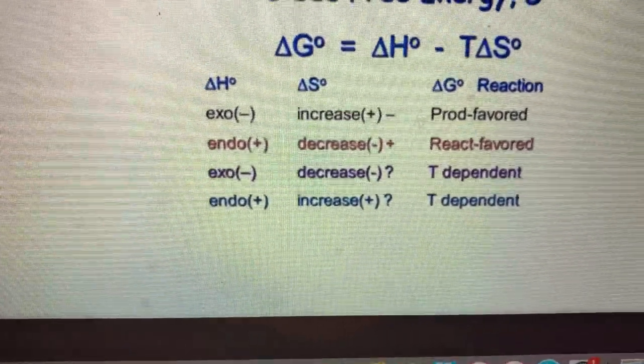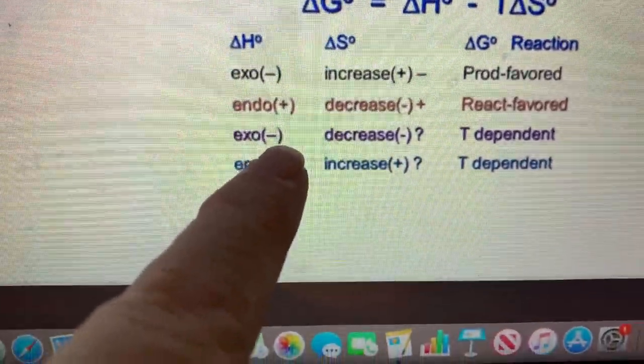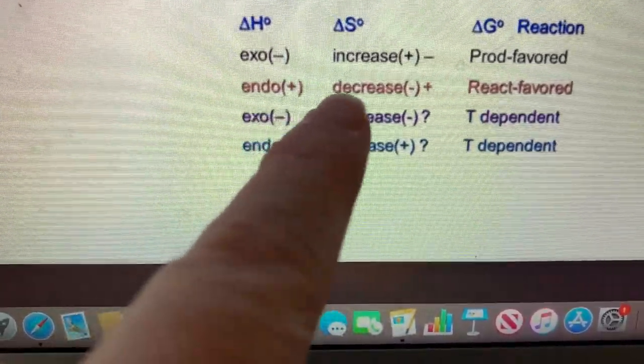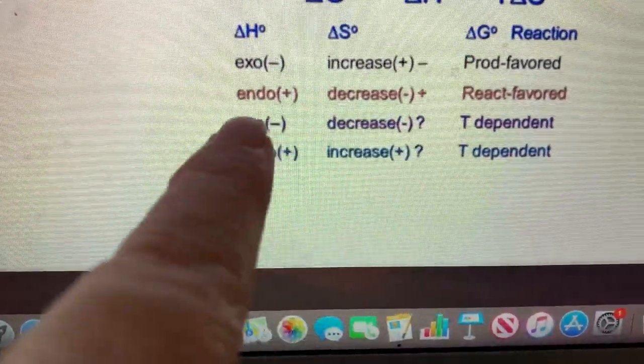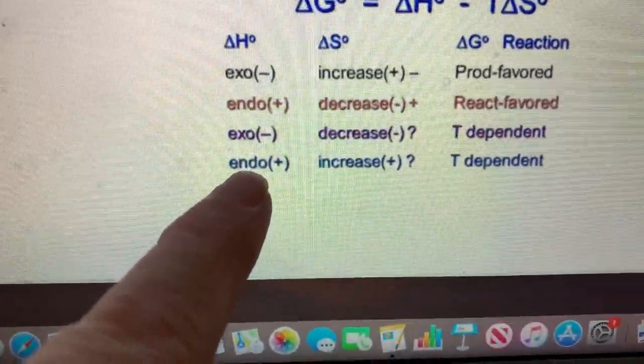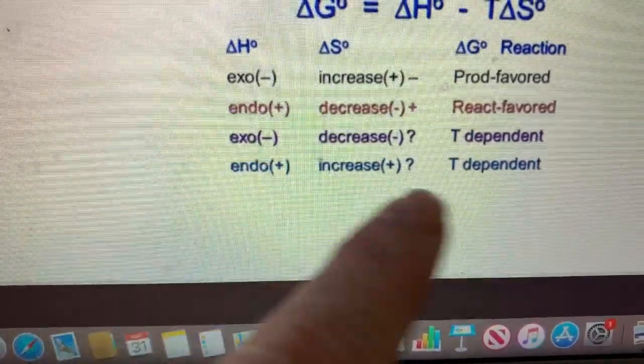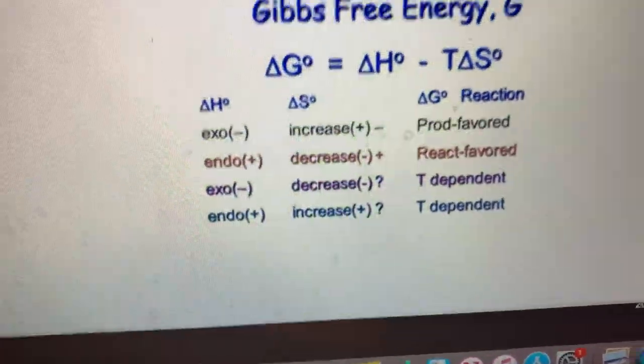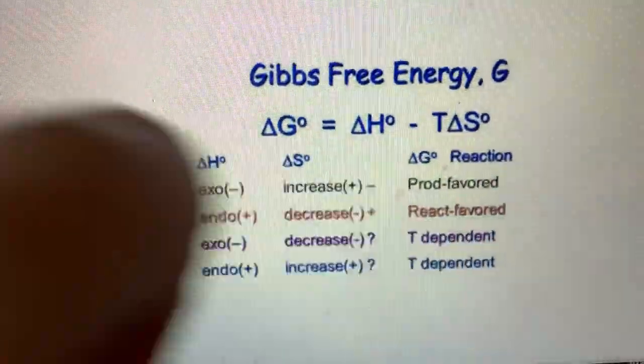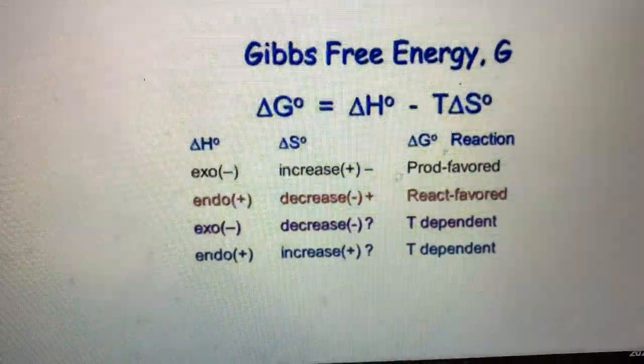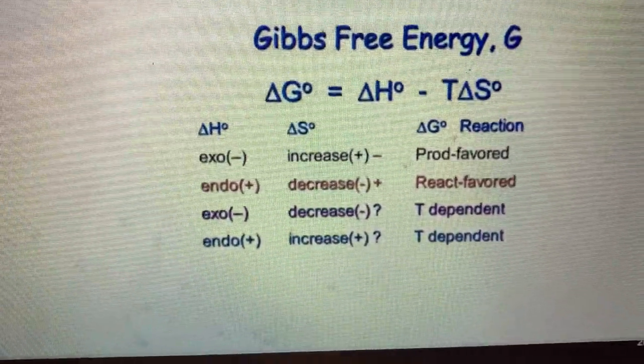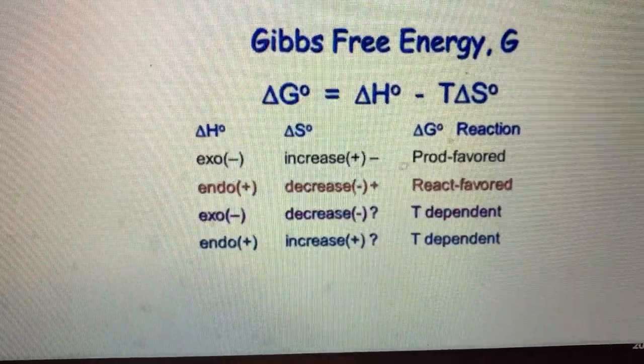If you find that you're exothermic and a decrease in entropy, so both the signs are negative, same sign, you're going to have to do some work because it depends on that temperature. Endothermic and an increase in entropy, again same sign, temperature dependent and you're going to have to do some work. By doing some work all I mean is you're going to have to solve for this. If you get a negative delta G, it means it's a spontaneous reaction. If you get a positive delta G, it is not spontaneous.